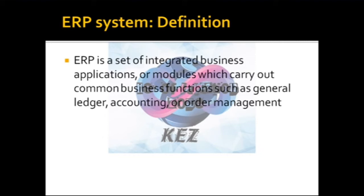How they utilize these resources — suppose a teacher of physics can give details of physics but cannot give expertise in another subject like history. So if you maintain that resource for that purpose, they will give their expertise better. That type of planning made by any software is termed as ERP. So ERP is a set of integrated business applications or modules which carry out common business functions such as general ledger, accounting, order management, etc.